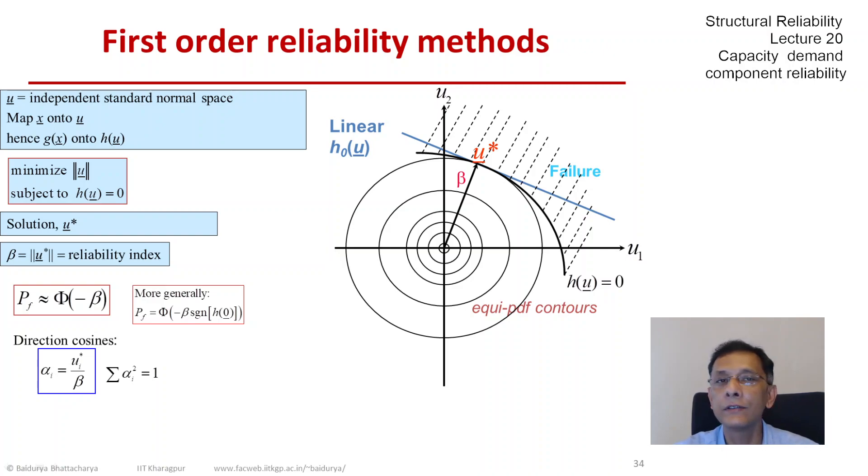If the sign is positive, then it is what we have been talking about. If the sign happens to be negative, which means origin is in failure, then the failure probability becomes Phi of beta. If beta is a large enough number, then failure probability is going to be very high. In any case, it is obviously going to be greater than half because beta is a distance, so it can never be negative.